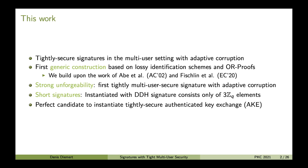Besides that, we were able to refine the construction considered by Abe et al. and Fischlin et al. to shorten the signatures. Concretely, this means that when instantiated with DDH, our signatures only consist of three Z_Q elements, where Q is the size of the Diffie-Hellman group. All of these properties — strong unforgeability and short signatures — make our construction a perfect candidate to instantiate tightly secure authenticated key exchange.